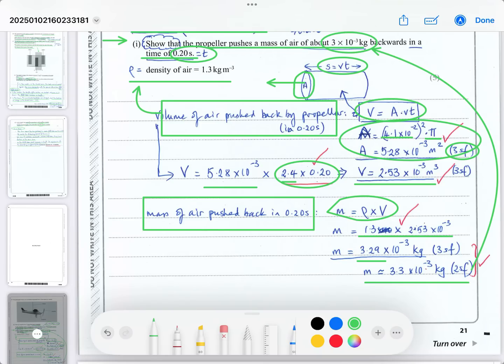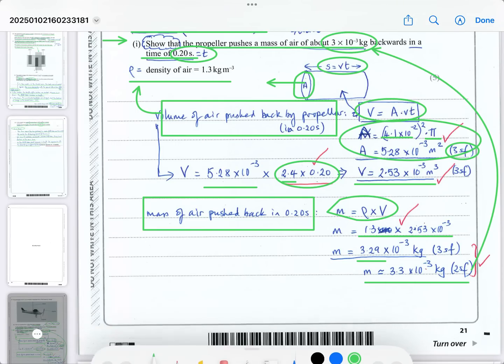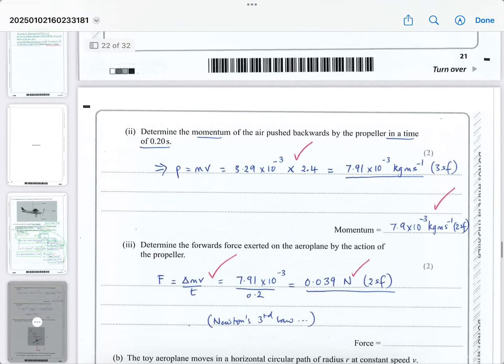Write this clearly for the examiner. A strict examiner might say you haven't shown it's approximately 3×10⁻³ kg, so state explicitly that to one significant figure it equals 3×10⁻³ kg. Examiners can be quite strict about clarity. That's the end of that section.